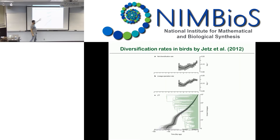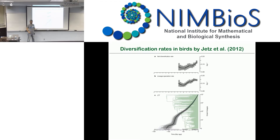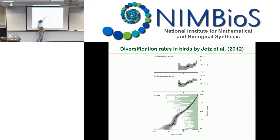A different approach to estimating diversification rates through time is to a priori specify time bins and estimate diversification rates within each bin. Rather than estimating when shifts happen, you just specify equally-distant epochs and see what the curve through time looks like. This is also an idea we use in our tutorials.